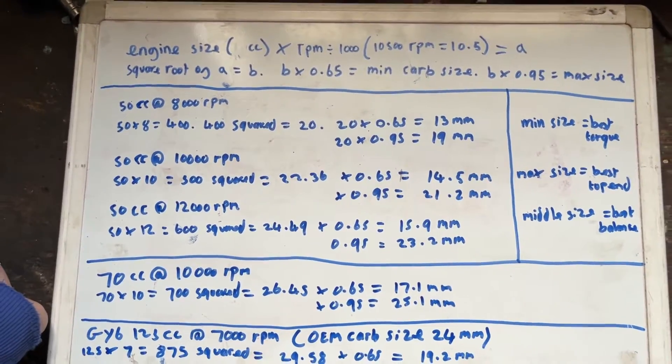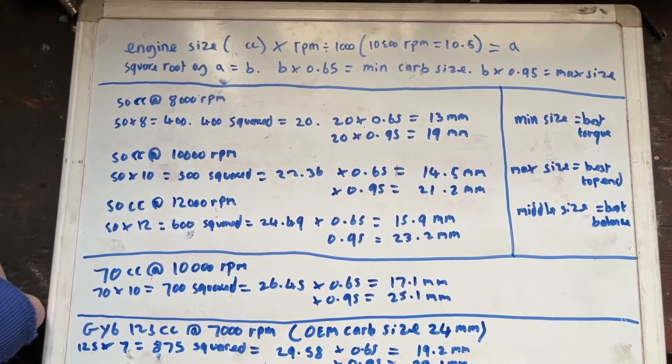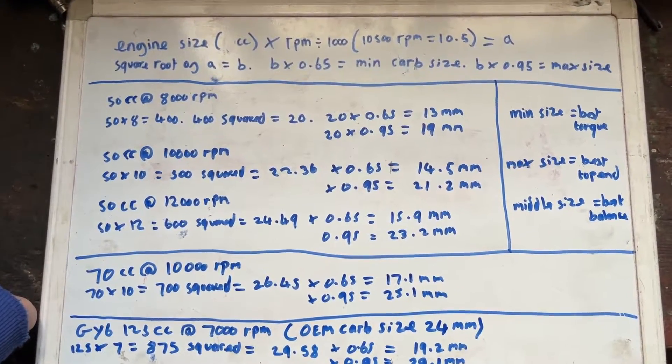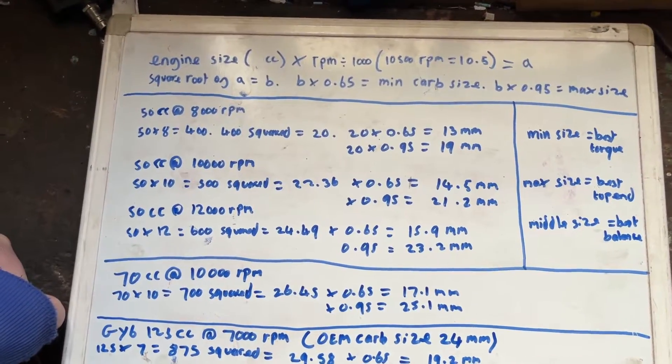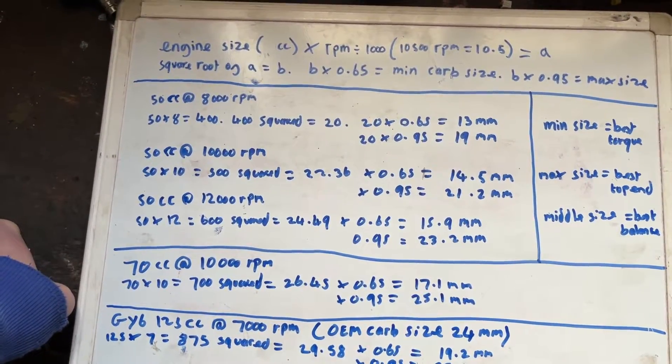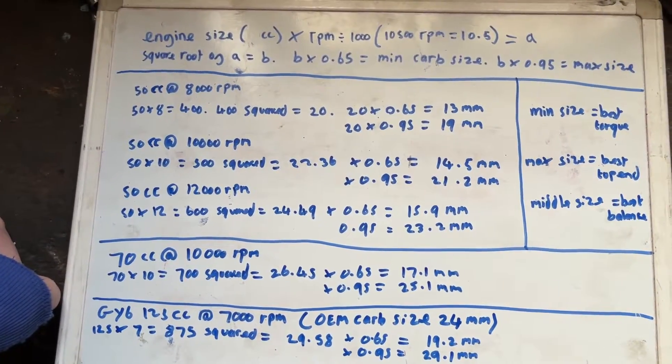Now as far as working out what your max RPMs are, if your scooter is totally stock obviously the information will be on the manufacturer's website. If you have like a big bore kit or something like that on it, a lot of times the manufacturers like Polini and Malossi will have some specifications for those individual kits.